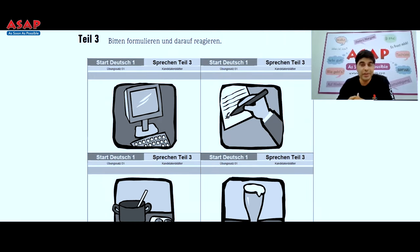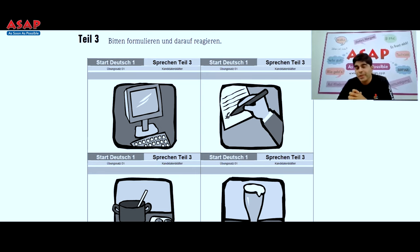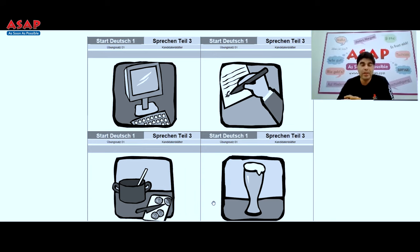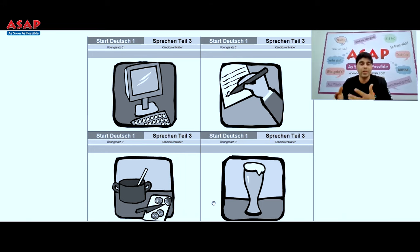Tile Drei is the last part of the speaking module. In Tile Drei, you get a card with some image or picture, and you have to frame a request based on it. For example, if the first picture is a computer, a possible request would be: 'Kann ich bitte den Computer benutzen?' or 'Kann ich den Computer sehen?' The other person responds logically — like 'Ja, natürlich' or 'Warum nicht?' The response should be logical.